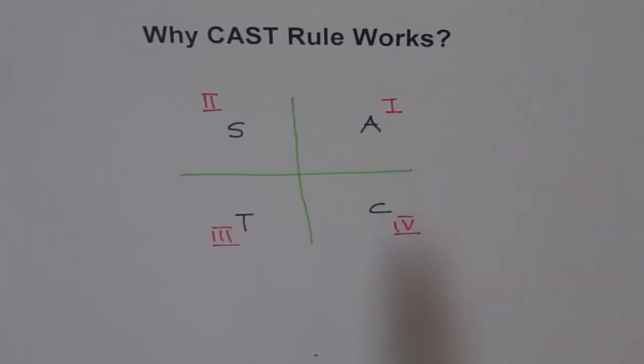Our age-old rule in India has been All Silver Tea Cup. So we started with quadrant 1, all are positive. Silver is for sine. We love tea, tangent, quadrant 3. And cup for cosine.